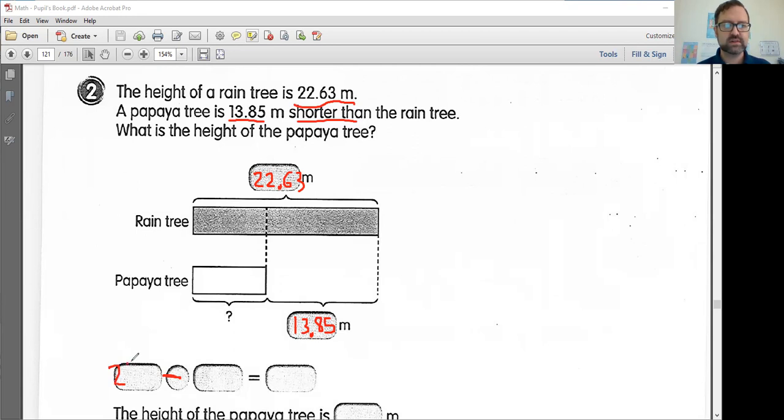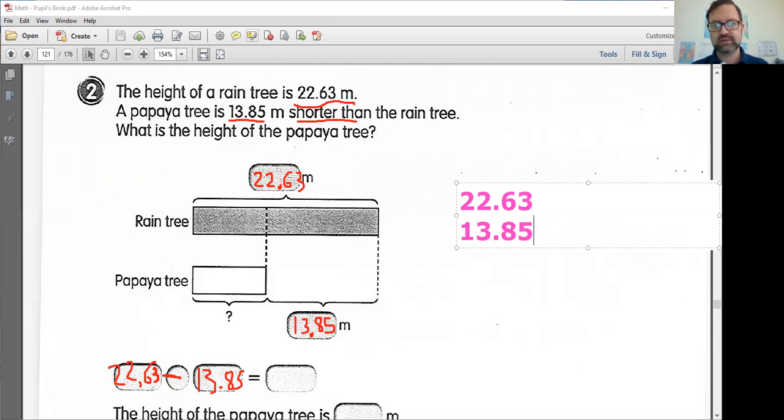We are going to be doing a subtraction problem here. We are going to take our total, which is the height of this rain tree. And then we're going to subtract 13.85 here. Oh man, this keeps getting messier and messier. I'm going to switch to this one. So I have 22.63 minus 13.85. And what should our grand total be here? I'm going to put my subtraction mark here. This requires you to do some math. Don't try and do this all in your head. You will get confused and come up with wrong answers. That's why they give you all this space. You should use it.